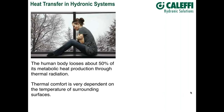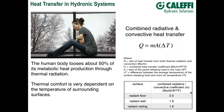Even though the air temperature might be considered comfortable — 68 to 72°F — the surface temperatures around you will have a very profound effect on comfort. This is one of the reasons radiant panel heating has increased in popularity: it creates warm surfaces that drastically decrease the rate of heat loss from your body by radiation.